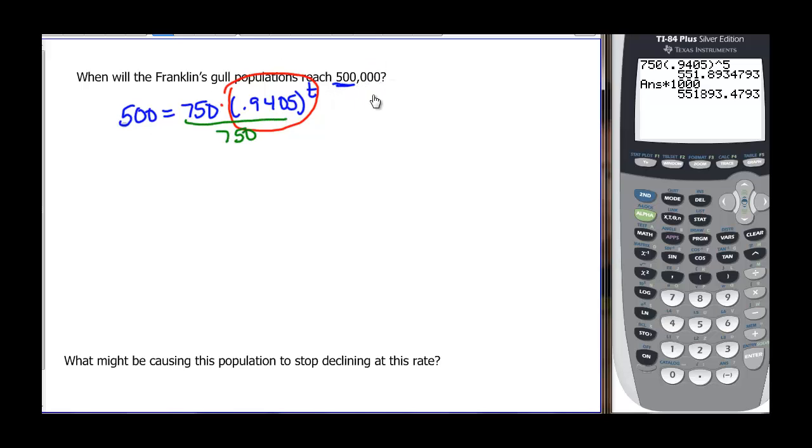Remember, we want to have as exact an answer as possible, so we're going to leave it as a fraction. 500 over 750 is going to be equal to our 0.9405 to the t. So we have an exponential here that we can just take the log of both sides. You know me, I tend to take logs instead of natural logs. But if you want to take a natural log, you could say ln instead of log everywhere that I'm writing log. Equal to log of 0.9405 to the t.